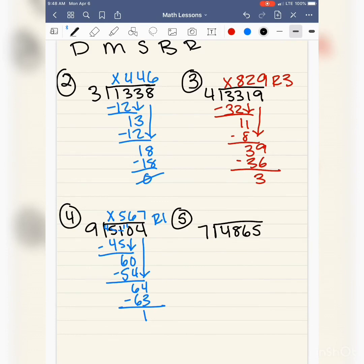Alright, so we have 4,865 divided by 7. 7 will not go into the 4, but it will go into 48 six times. 6 times 7 is 42. 8 minus 2 is 6, and I bring down my 6. 7 will go into 66 nine times. 9 times 7 is 63. 6 minus 3 is 3, and I bring down my 5. 7 will go into 35 five times. 5 times 7 is 35, so I have no remainder.